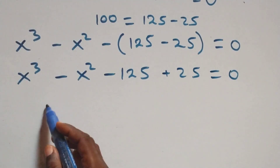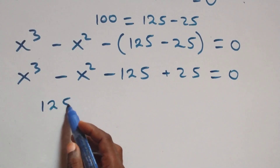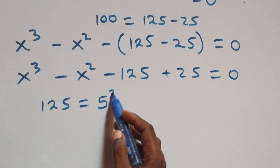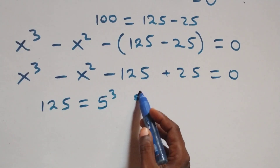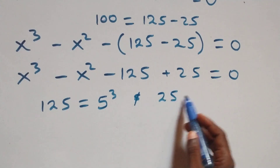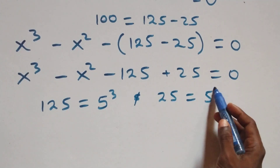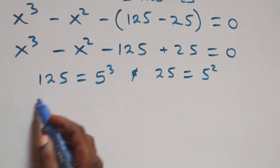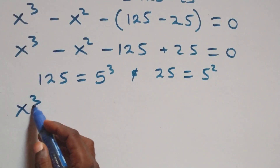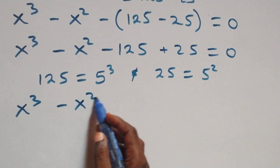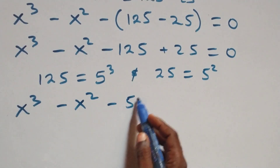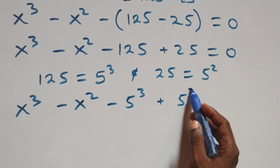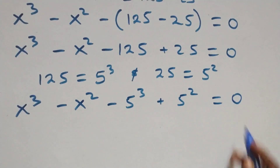We can rewrite 125 as 5 times 5 times 5, which is 5 raised to the power 3, and also 25 as 5 times 5, which is 5 squared. What we have here becomes x raised to the power 3 minus x squared minus 5 raised to the power 3 plus 5 squared equals to 0.